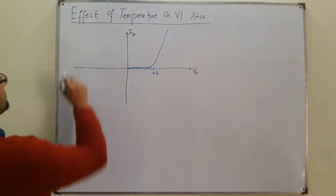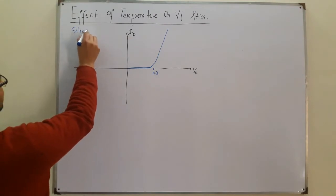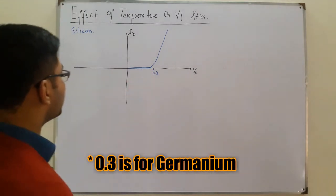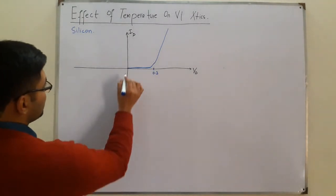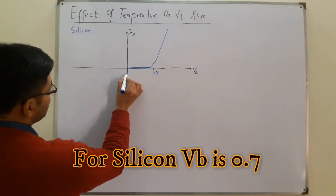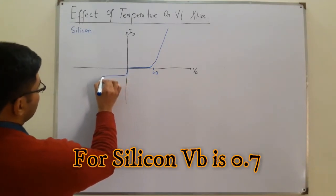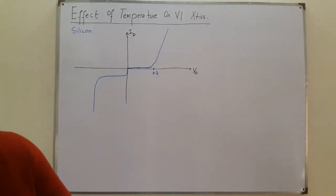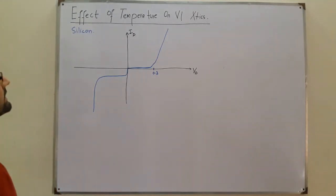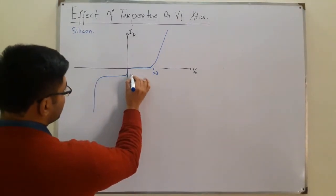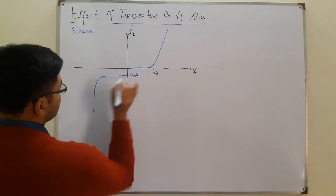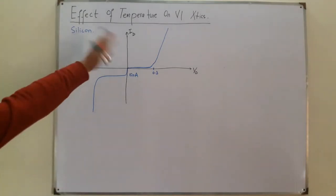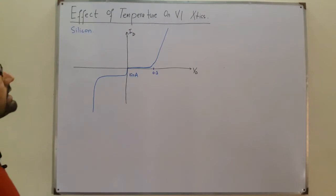This is for silicon — we are considering the silicon atom. This was for forward bias. Similarly, for reverse bias we have some value of reverse saturation current, and then we have the breakdown. The initial reverse saturation current value is 10 nano amperes.